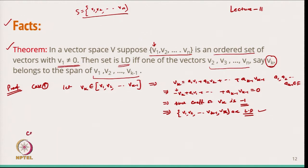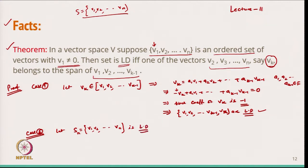Now we take the converse — the second part. Let us assume the set S = {V1, V2, ..., Vn} is linearly dependent. The set being linearly dependent means the vectors belonging to it are linearly dependent. We want to show that if vectors are linearly dependent, then one can be written as a linear combination of the previous ones.